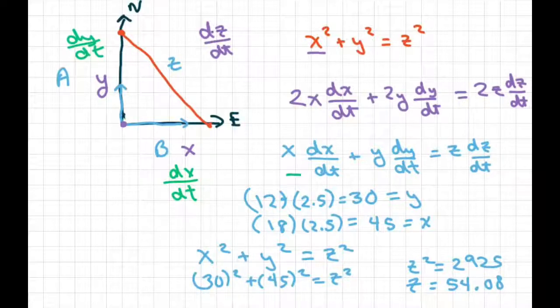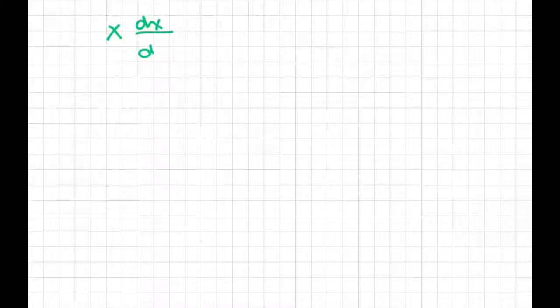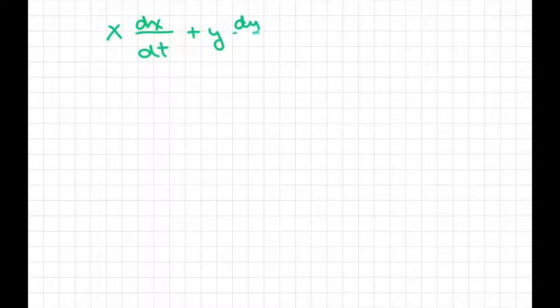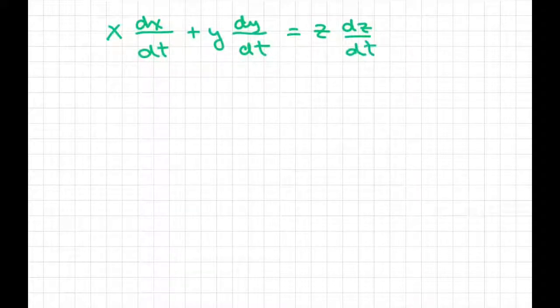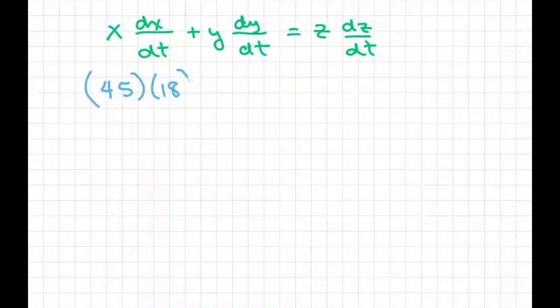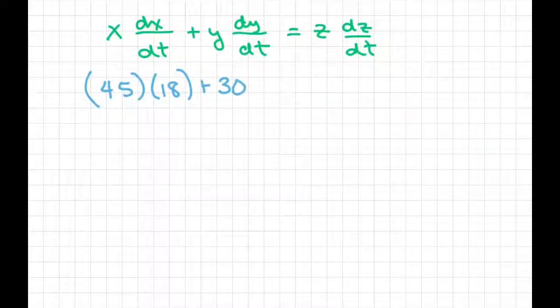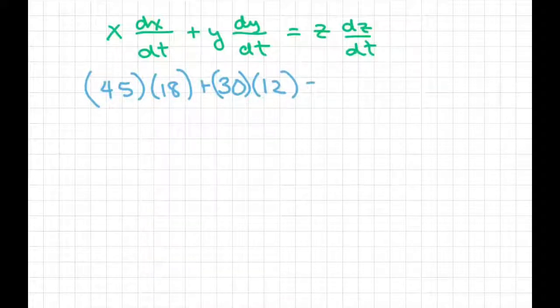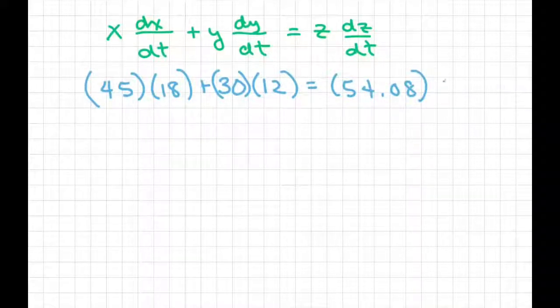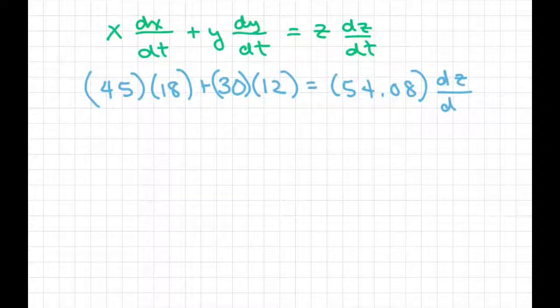Now I'm going to go back to this equation and plug everything in. So basically, if we plug everything in, I'm going to write it again. We have X DX DT plus Y DY over DT equals Z DZ over DT. And now we're just going to substitute. So my X was 45, and my rate of change is 18. My Y is 30, but my rate of change with respect to time is 12. And then we have Z is 54.08. And we don't know what DZ, the rate of change for Z is.